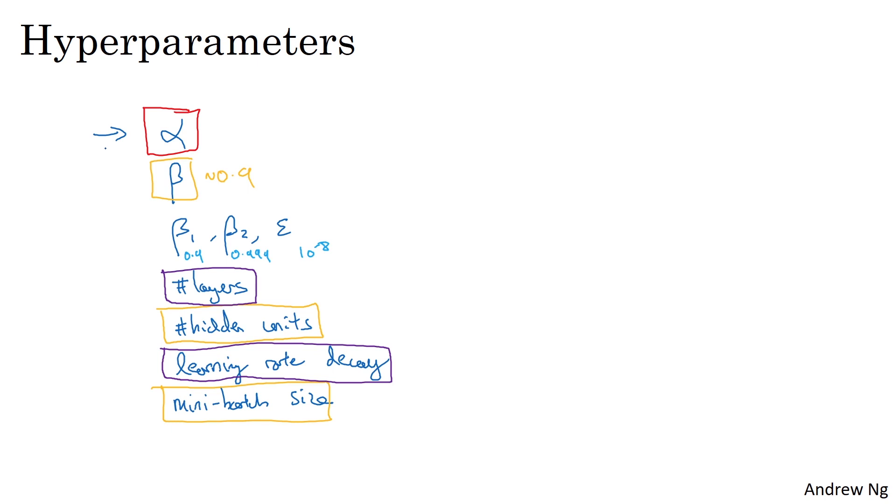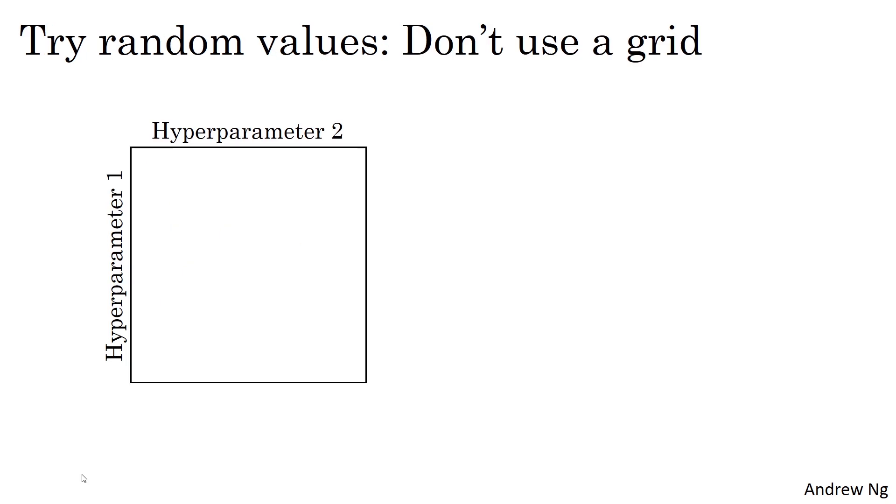Now, if you're trying to tune some set of hyperparameters, how do you select a set of values to explore? In earlier generations of machine learning algorithms, if you had two hyperparameters, which I'm calling hyperparameter 1 and hyperparameter 2 here, it was common practice to sample the points in a grid like so and systematically explore these values.